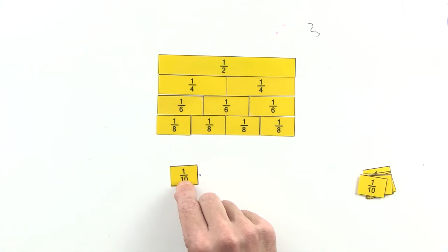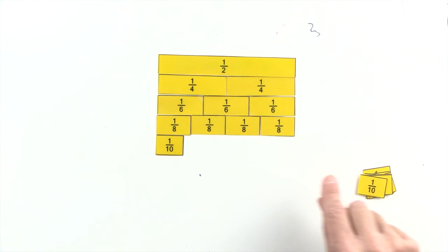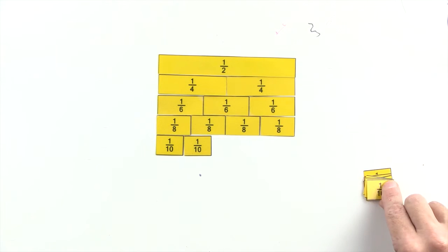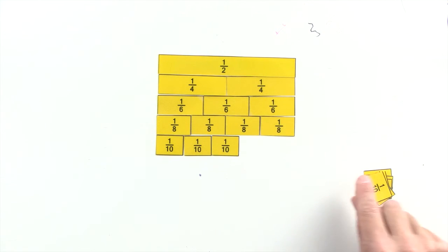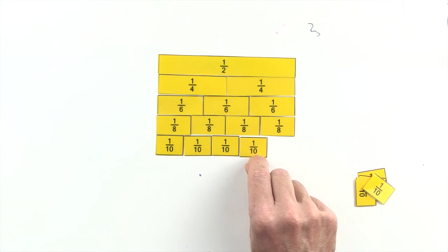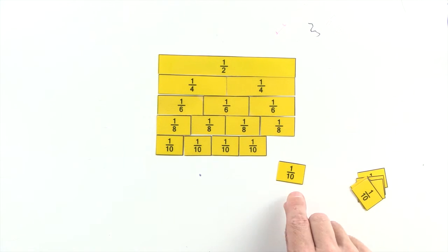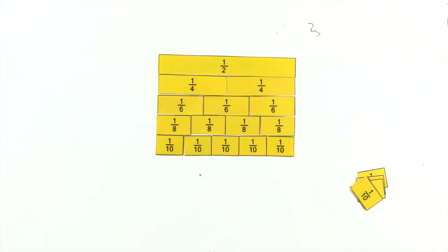One tenth, two tenths, three tenths, and four tenths are less than one half. But five tenths are equal to one half. So five tenths and one half are equivalent fractions.